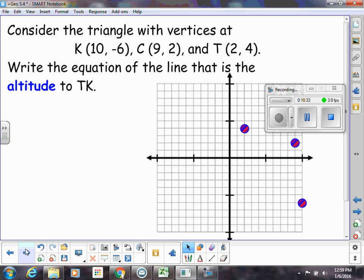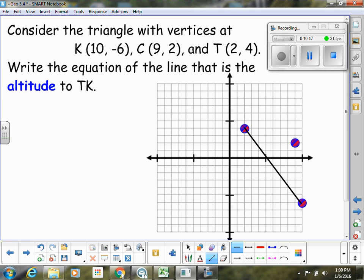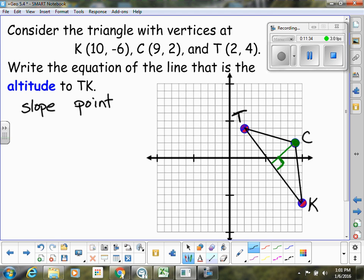So let's look at another coordinate example. So we have this triangle, and these points are already graphed for us. I'm going to go ahead and connect those. And so we have that triangle. We would need to write the equation of the line that is an altitude to TK. Well, let's label which one is which. So 10, negative 6, this is K. 9, 2, that's C. And then T is this 2, 4. So I want the altitude that is to TK. So that means it's going from vertex C and perpendicular to TK. So if I'm trying to write an equation, what do I need for an equation? I need the slope of the line, and I need a point. Well, I have a point. This green line is going to go through point C. So this point C is my point.